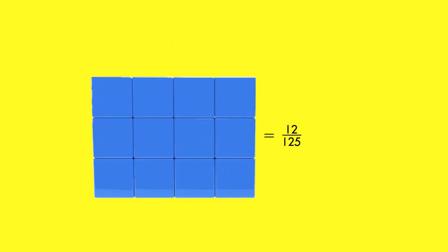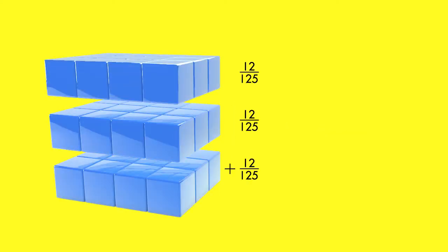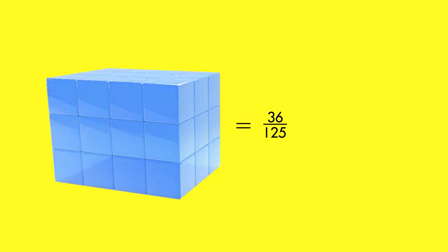The volume of each layer is twelve one-hundred-twenty-fifths of a cubic inch. Since the original prism has three layers, add that volume together three times. The total volume of the rectangular prism is thirty-six one-hundred-twenty-fifths of a cubic inch.